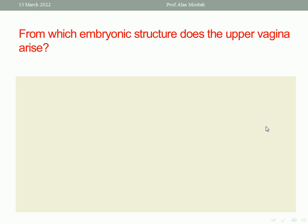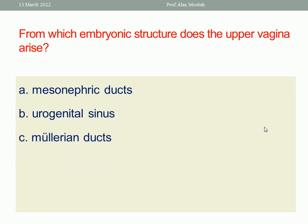From which embryonic structure does the upper vagina arise? Mesonephric ducts, urogenital sinus, Müllerian ducts, genital ridge. We know that the upper vagina, uterus, and fallopian tubes come from the Müllerian ducts. So the right answer is Müllerian ducts.